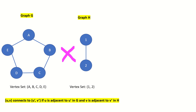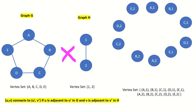Now let's find the tensor product of a cycle graph G with five vertices and a path graph H with two vertices. First, find the Cartesian product of the vertex sets of the two graphs. So our tensor product graph will have ten vertices. Now let's determine the adjacencies. According to our adjacency condition, a1 only connects to vertices with letter b or e — whose left entries are vertices adjacent to a in graph G. We also know that a1 will only connect to vertices with number 2, whose right entry is a vertex adjacent to vertex 1 in graph H. Therefore, a1 connects to b2 and e2. I encourage you to pause the video and find all the adjacencies yourself using the condition highlighted in yellow.